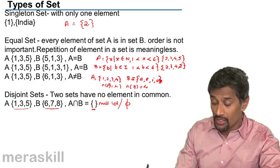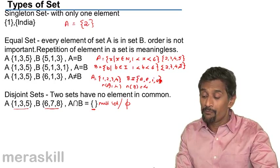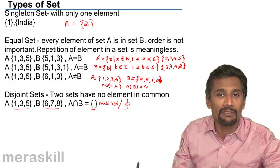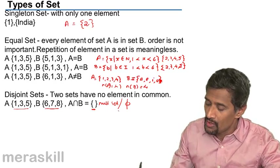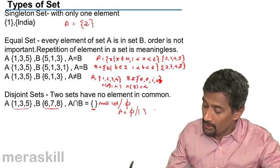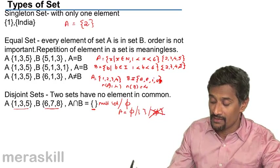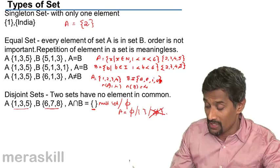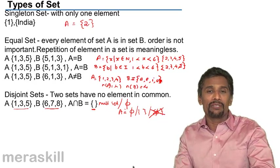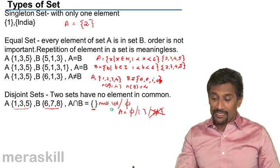It is not a null set if zero is present in it, because zero is an element. A set which has no element in it is called a null set. For example, the set of even prime numbers greater than 2 is a null set, since the only even prime is 2. We write it as phi or as empty braces — but definitely not as {phi}, placing phi inside braces is wrong. Either write phi or just an empty brace bracket. An empty set is one which does not satisfy any element of the given condition.